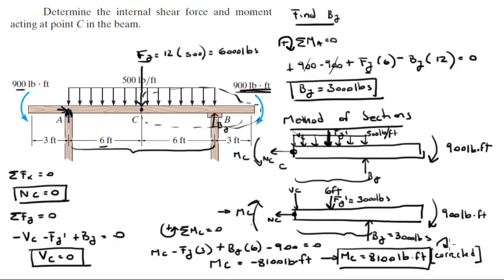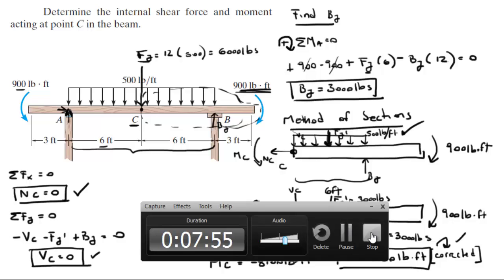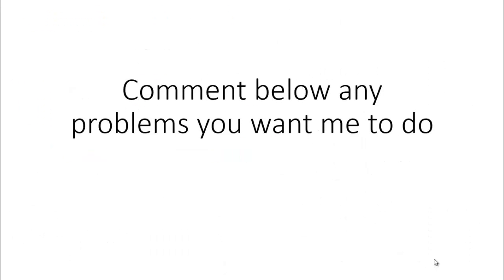So final answer for the moment, final answer for the shear, and final answer for the normal force at C. The point to remember about this sort of problems is when you have a distributed load going over the point that you're trying to find the shear, normal, and moment, remember the distributed load continues. When you use the method of section, you got to recalculate it with the new distributed load. So that's the important point of this exercise. Please comment below if you want me to do any problems and I'll be happy to help. Thank you.